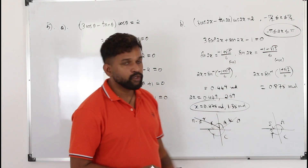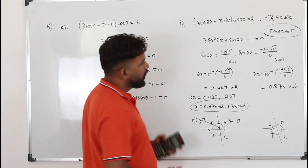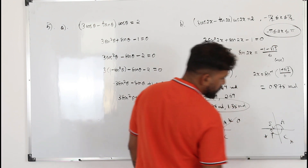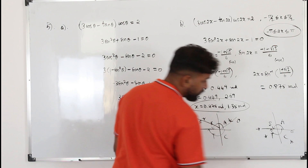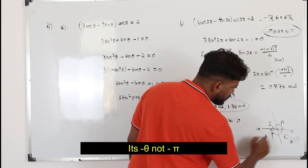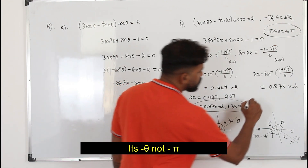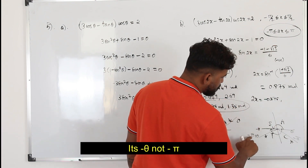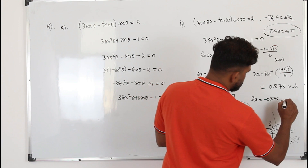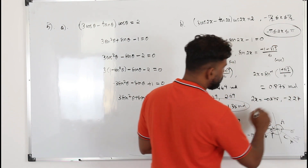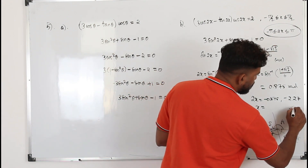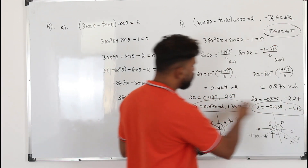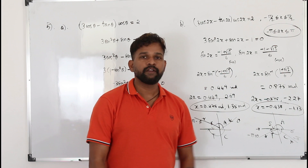For the second equation, sine is negative, so we look for quadrants where sine is negative — the third and fourth quadrants, from 0 to minus π. This gives 2x equals minus 0.875 and minus π plus the principal value, which is negative 2.27. Dividing by 2 gives x equals negative 1.13 and negative 0.438. So in total we have four solutions for this trigonometric equation.